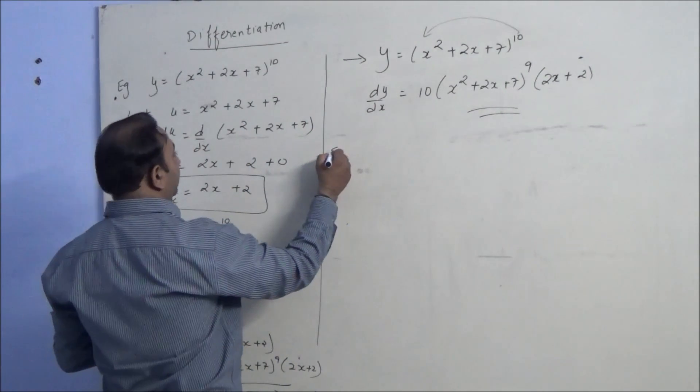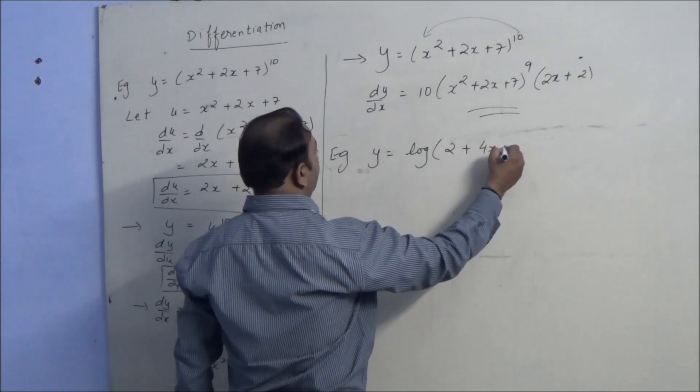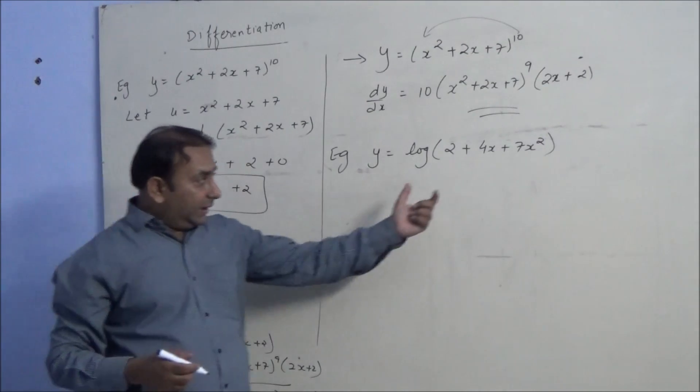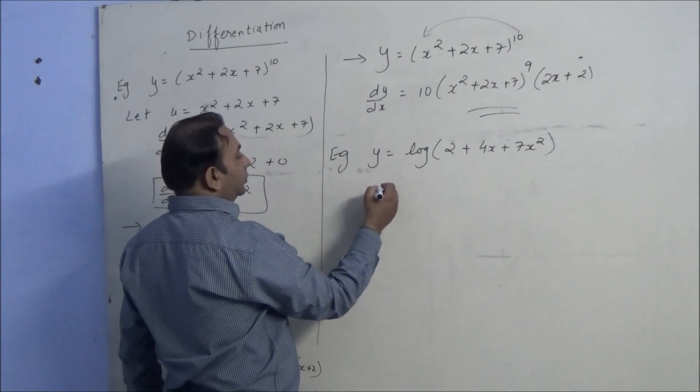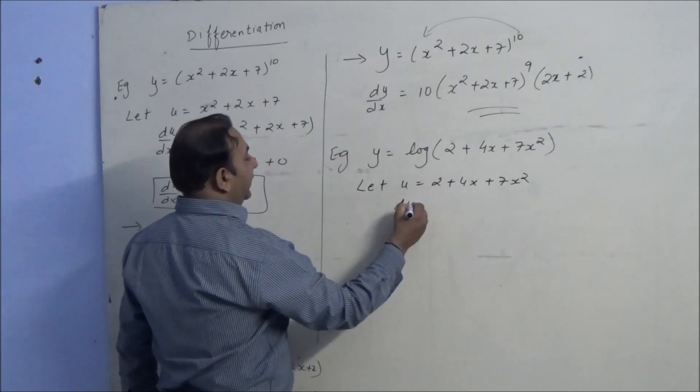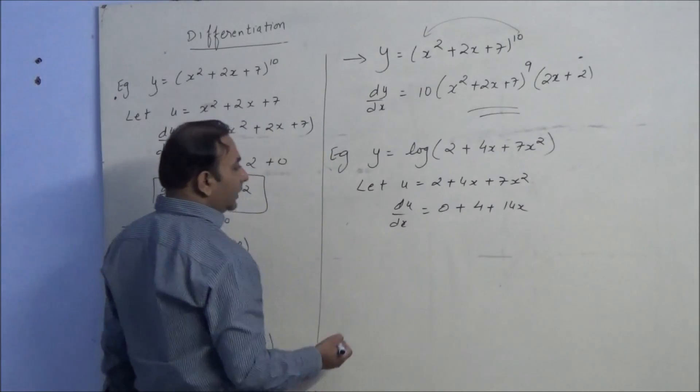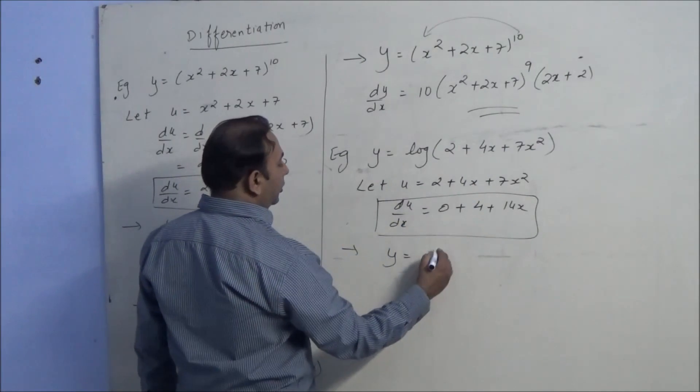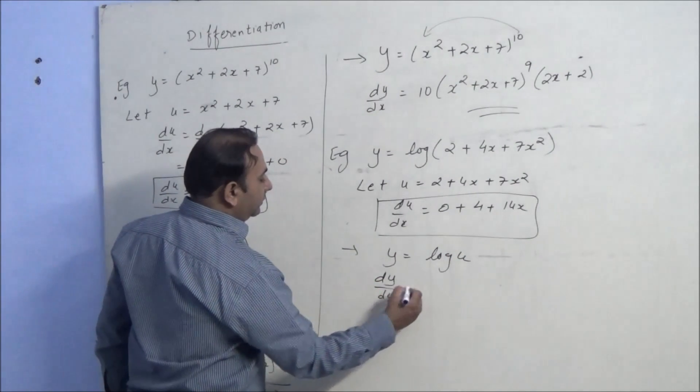Now let's see one more example of this. Say y equals log of 2 plus 4x plus 7x squared. It is an assumed example. Now we can take this bracket as u. Again my formula. So let u equals 2 plus 4x plus 7x squared. Derivative of this will be 0 plus 4 plus 14x. This we call du by dx. Similarly, y is log u, as we have taken this bracket as u we can write log u. So dy by du will be 1 by u.